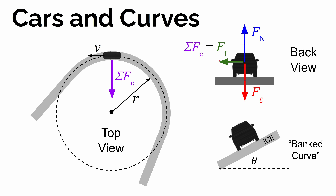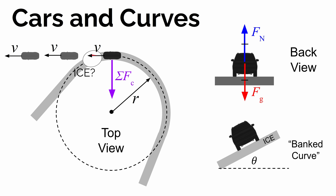If we took that frictional force away — imagine we had a patch of ice, the car was going around a curve and hit that patch of ice, and friction was negligible — then the sum of the forces would be zero. The normal force and the gravitational force cancel each other out, and the car is just going to move at a constant velocity, meaning constant speed in a straight line. So that car would essentially fly off the road in the direction it was traveling, tangent to that circular path.